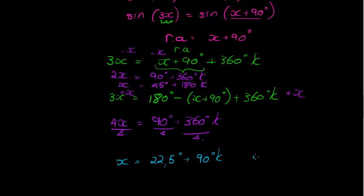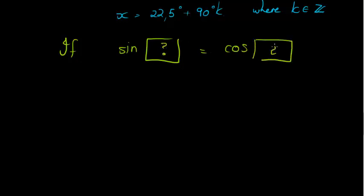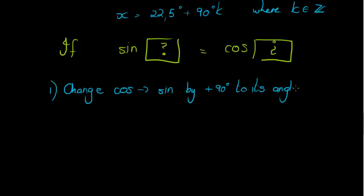And there are my two solutions, or my two general solutions at least, where k is an element of integers. So let's just summarize that. This I can do. If I have a sine of something equal to a cosine of something else, this is something and this is something else I don't know what that is. Then my first step would be change cos to sine by plus 90 to its angle.